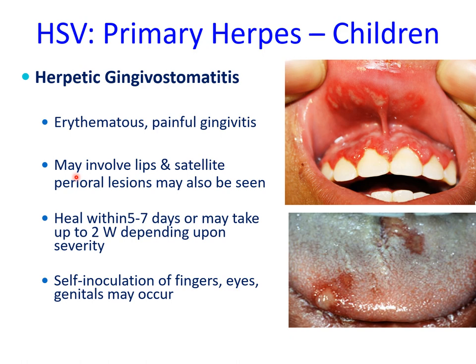In addition to intraoral lesions, there may be lesions involving the lips and satellite perioral lesions in some cases. Generally these ulcers heal within five to seven days but may take up to two weeks depending upon the severity. Importantly, self-inoculation of fingers, eyes, and genitals may occur in children, and it is important to maintain good personal hygiene.